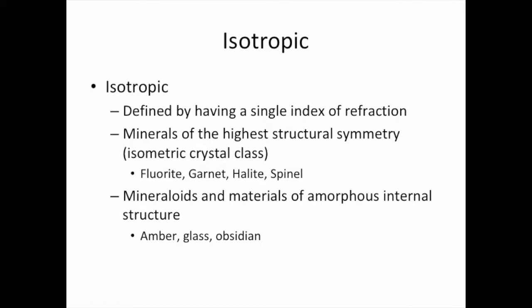The most important thing about isotropic substances is that they're going to have a single index of refraction no matter how you look at them. This can occur either in minerals of the highest symmetry class — the isometric crystal class — or in mineraloids and materials that are actually amorphous and not true minerals at all. Common isotropic substances of the isometric crystal class include fluorite, garnet, halite, and spinel, as well as more exotic things like diamonds. Mineraloids and amorphous materials are pretty common, the most common being glass, which you can see pretty much everywhere.